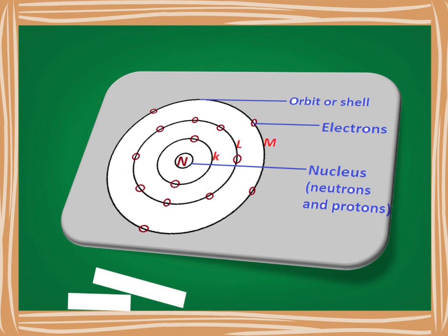This is how we find the number of electrons in each shell. To recap: the nucleus is in the center of the atom, containing neutrons and protons. Neutrons are chargeless; protons are positively charged. Surrounding the nucleus are orbits containing electrons, and the number of electrons is given by the formula 2N².